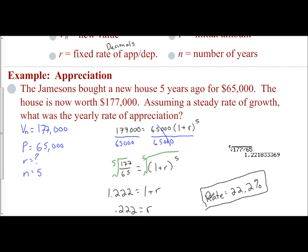Same idea: you start with the formula, identify what each value is, and figure out how to solve. Since our rate is contained in that object, we have to isolate it first and then get rid of the exponent by doing the inverse operation — the inverse of the fifth power is the fifth root — and then solve for our rate from there.